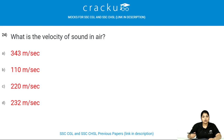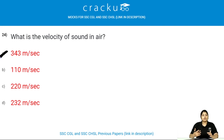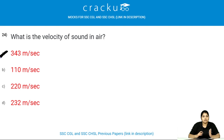What is the velocity of sound in air? The velocity of sound in air is 343 meters per second. Such values you need to remember — there is no particular logic, you just have to memorize them.